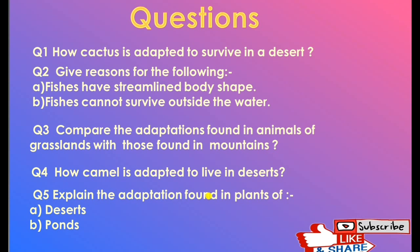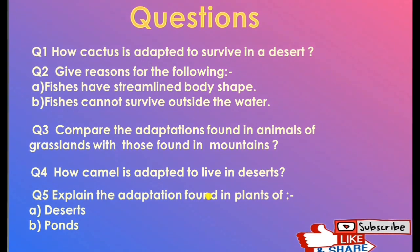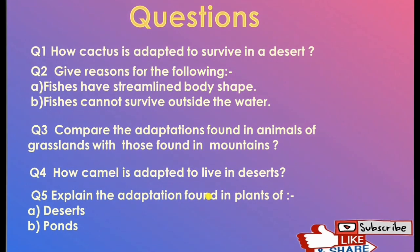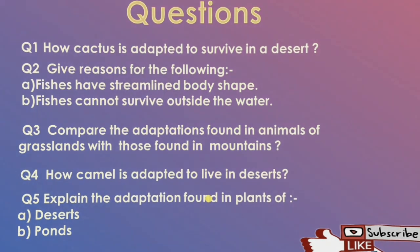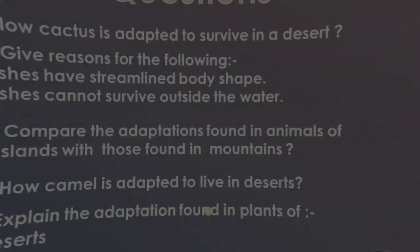Camels have long legs to keep their body away from the hot desert ground and they store water in their body to reduce water loss. Desert plants like cactus have small leaves. Aquatic plants in ponds have three types: submerged, floating, and rooted. Their stems are hollow and flexible so that water currents do not break them. This concludes Part 1 of our chapter — please give your feedback.